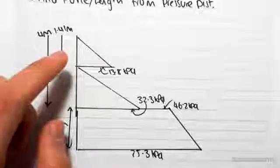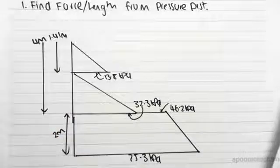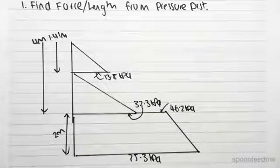And this extended further out to 75.3 kPa. So all I've done is I've combined the clay layer and the sand layer, the pressure distribution we developed. And now we're going to be able to find the force per unit length. So just a quick reminder of what we're doing.